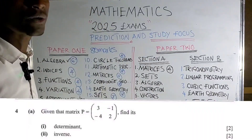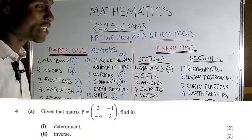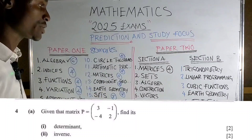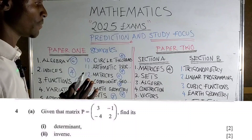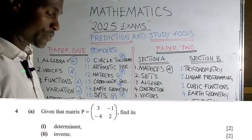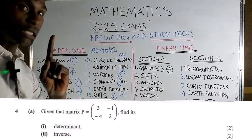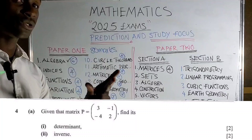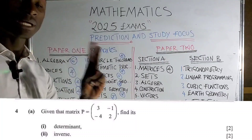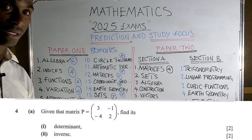Section A is compulsory — you need to answer all questions in section A, and matrices usually comes as the first or second question. Matrices can come in three ways. The first way: you are given a single two-by-two matrix and asked to calculate the determinant and the inverse of that matrix.